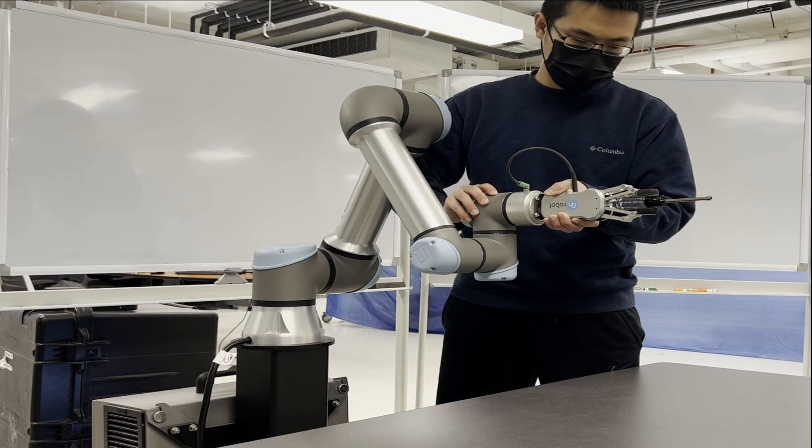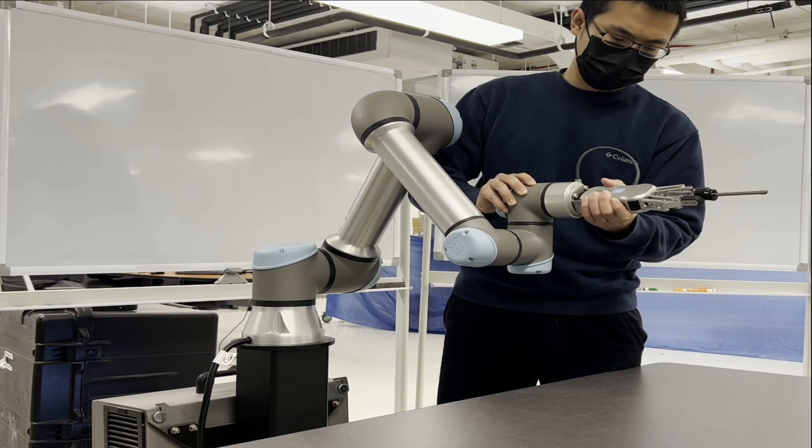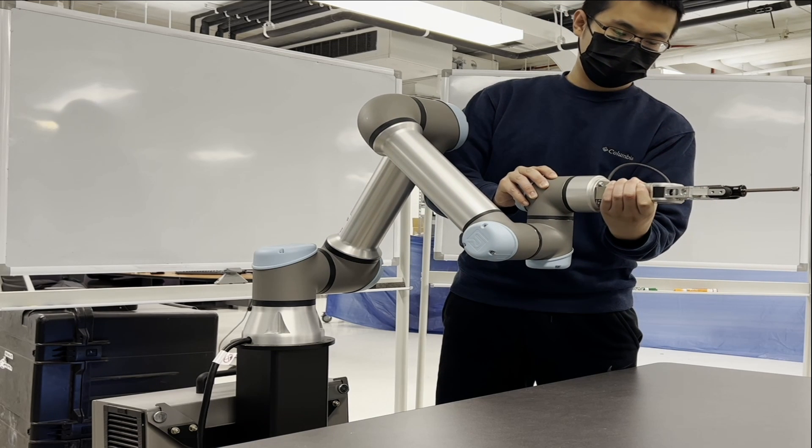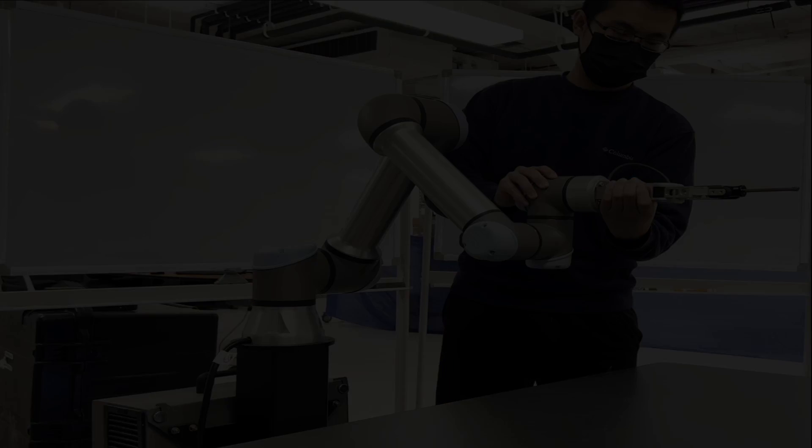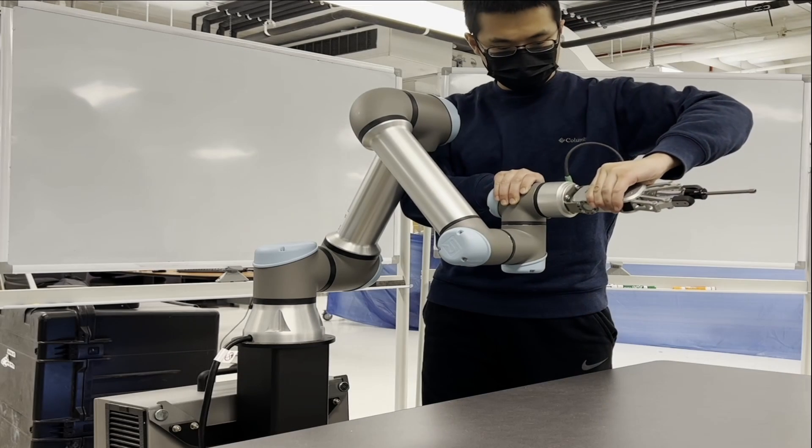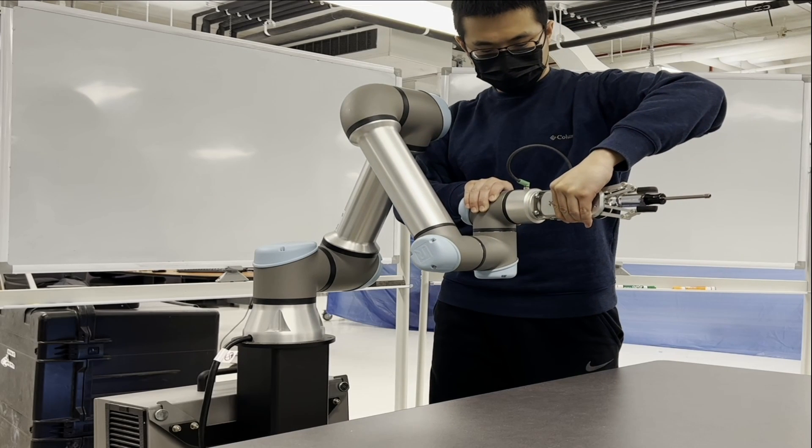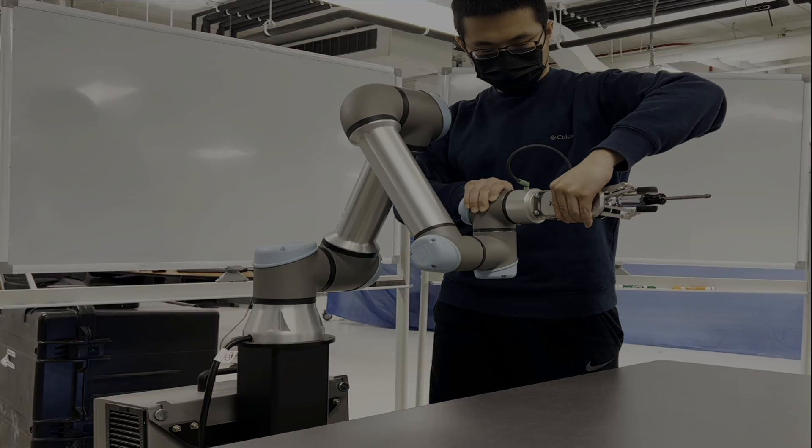The library of human demonstrations contains five tasks. In screwing task 1, the end effector is required to twist the screwdriver 90 degrees clockwise while moving straight forward. In screwing task 2, the end effector is required to twist the screwdriver 90 degrees counterclockwise while moving backwards.